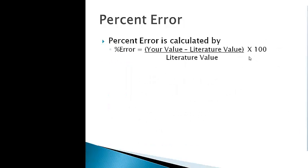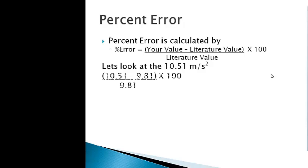So what is percent error? Percent error is just going to be calculated by taking your value and subtracting away that literature value. Notice that's in parentheses, so you've got to do that step first. Then what we'll do is we'll divide it by that accepted value and then multiply by 100. So let's look at that 10.51. What we'll do is we'll take your value, 10.51, and we'll subtract away that accepted value, 9.81, and get an answer. Then we'll divide it by the literature value, 9.81, and multiply by 100.